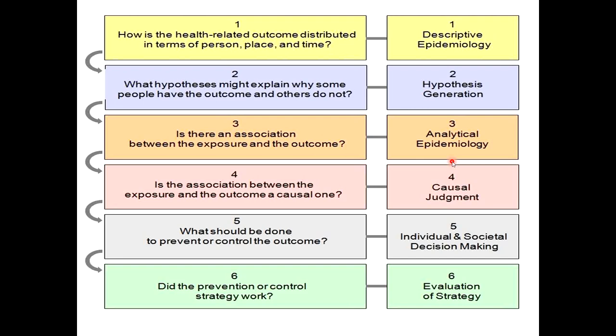Another important component is analytical epidemiology, where the epidemiologist wants to find out an association between exposure and outcome. He wants to accept or reject the hypothesis formulated by him, and by conducting analytical studies he accepts or rejects the hypothesis and makes a confirmatory analysis that there is a relationship between exposure and outcome.